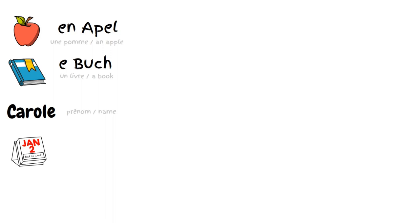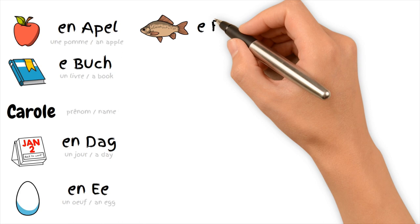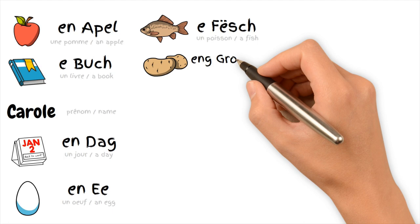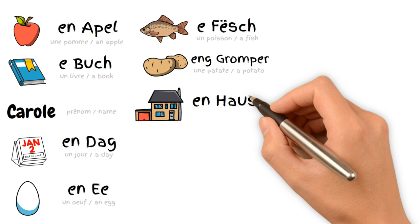D — a tree. E — a tree. F — a fish. G — a gromper. H — a house.